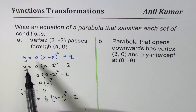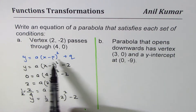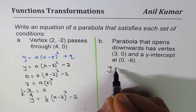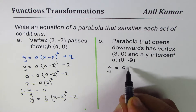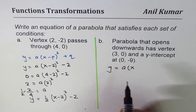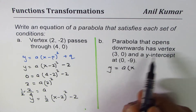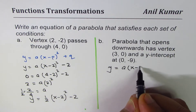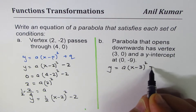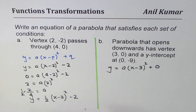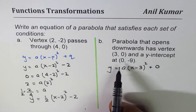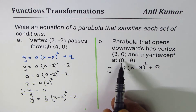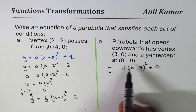We'll again begin with the vertex form of the equation and write y = a(x - 3)² + 0, since the vertex is at (3, 0). To find the value of a, we'll use the given y-intercept point.